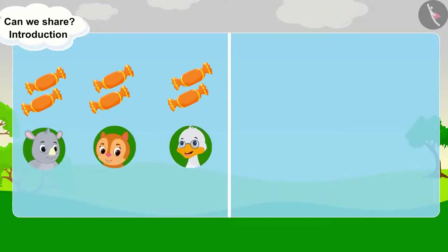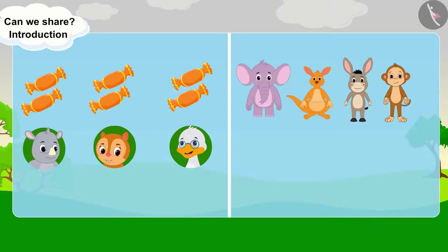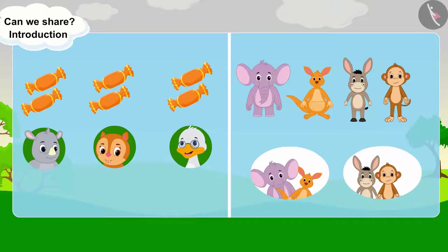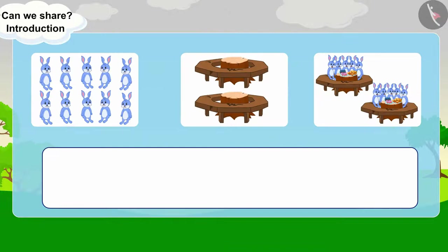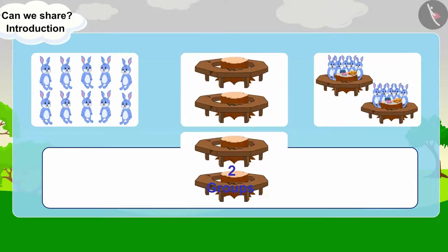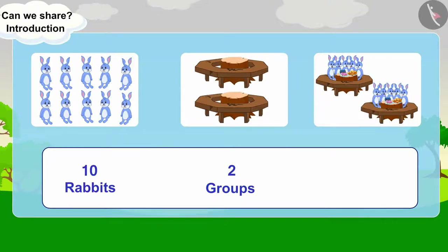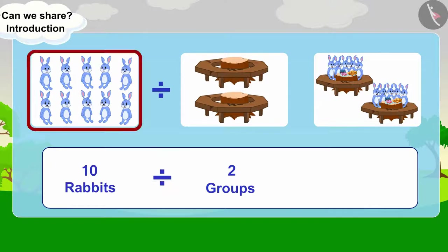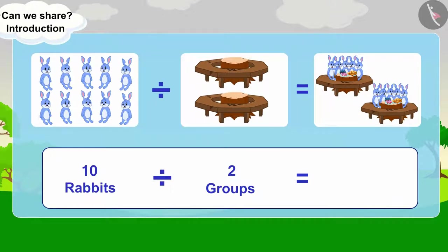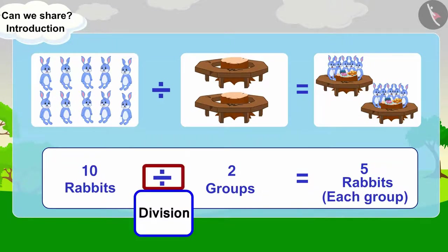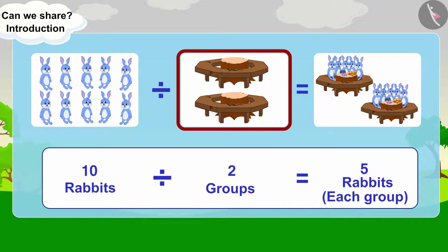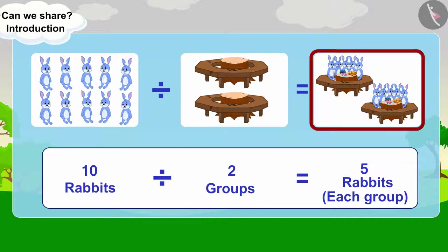Distributing things equally among people, or making equal groups of people or things, is called division. What are we doing here? Forming two equal groups of 10 rabbits — dividing 10 rabbits into two equal groups, there are 5 rabbits in each group. This is the total number of things to be divided. This is the symbol of division. This is the total number of groups. This is the total number of things in each group.